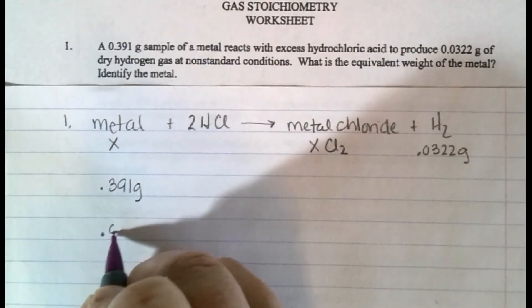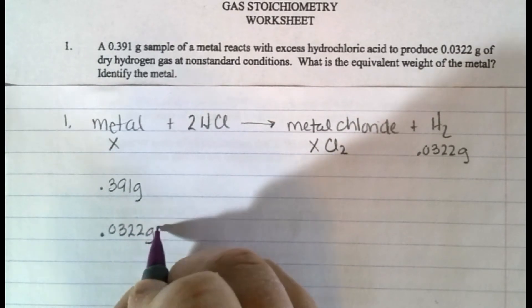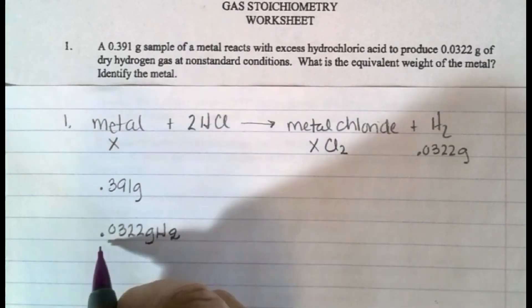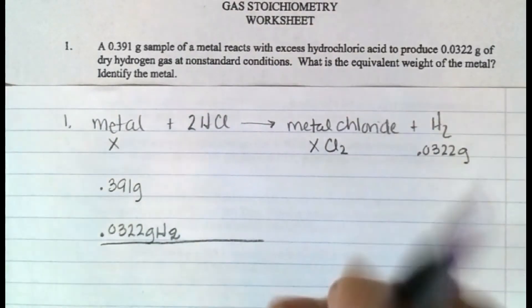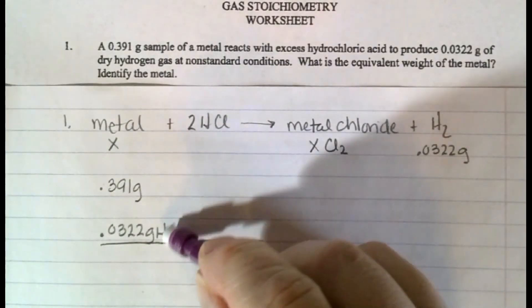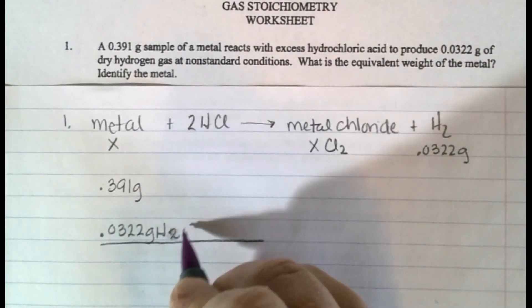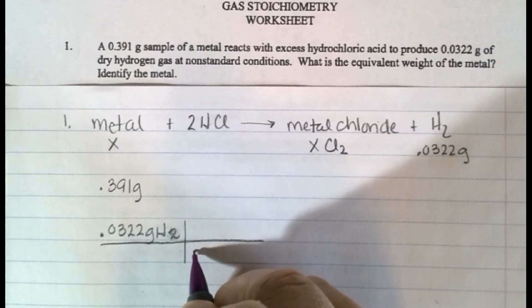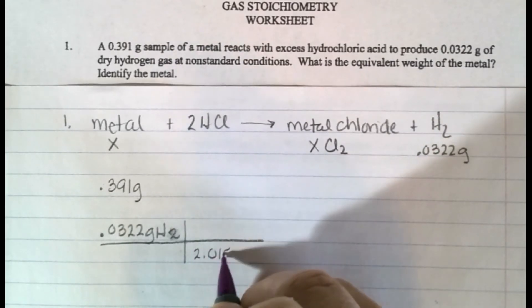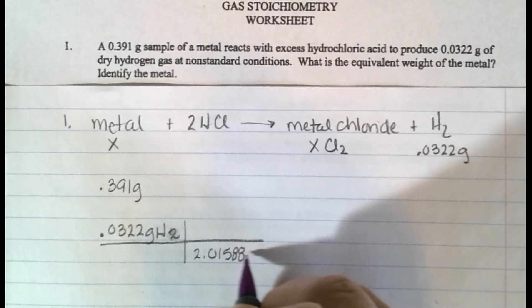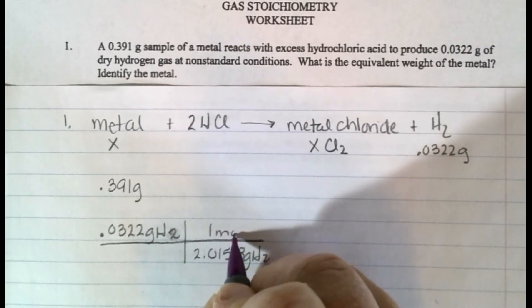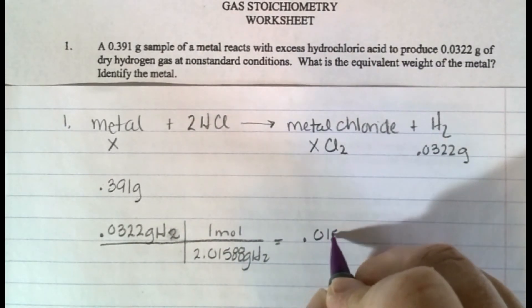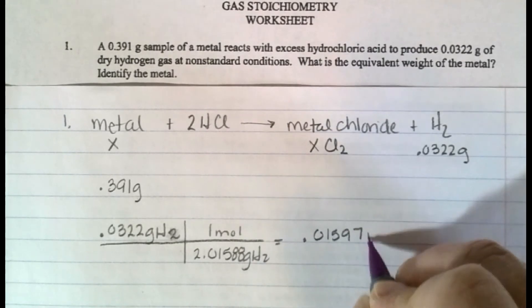So the first thing that I'm going to do is I'm going to change my hydrogen into moles. So I have mass to moles, 0.0322 grams hydrogen. This is a short one, so I'm not going to use my straight edge this time. I probably should have. Let me make that 2 a little bit better. Excuse me. And I have here that, looking at the periodic table, hydrogen gas is 2.01588 grams in one mole. So I math it, and I get 0.01597 moles of hydrogen.